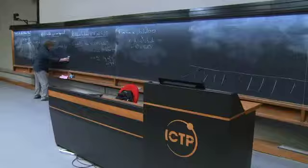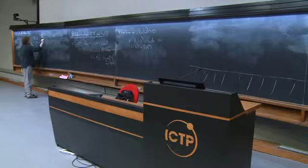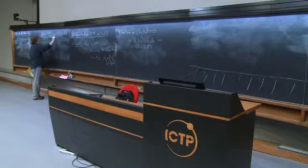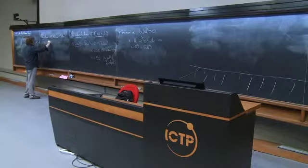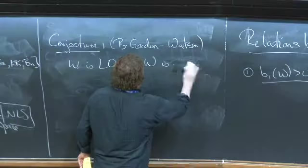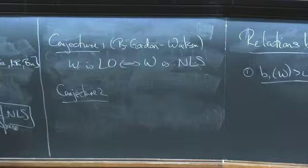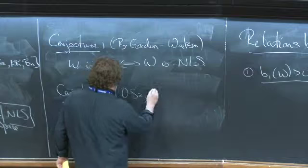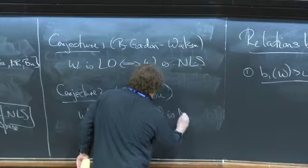Nevertheless, after a lot of examples had been looked at, two conjectures came out. So conjecture one due to myself with Cameron Gordon and Liam Watson is that W is LO if and only if W is CTF. Sorry, it's NLS if and only if W is CTF. And conjecture two, well it's a bit, I'm not exactly sure who to attribute this to, but I'm going to put down some names. So Ozsváth-Szabó and Juhász, what's the conjecture? W is CTF if and only if W is NLS. So in fact, what the reality is is that when Ozsváth and Szabó showed CTF implies NLS, they asked if the opposite is true.